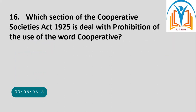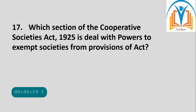Next question number 16: Which section of the Cooperative Societies Act 1925 deals with prohibition of the use of the word 'cooperatives'? Section 62 deals with prohibition of the use of the word 'cooperatives'.